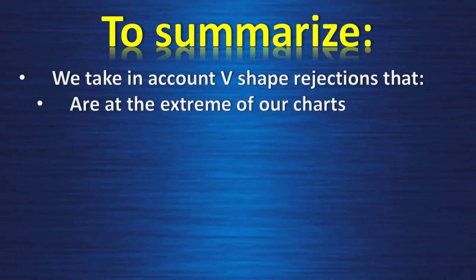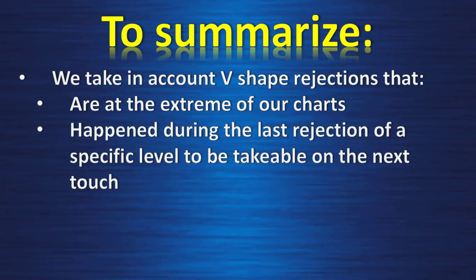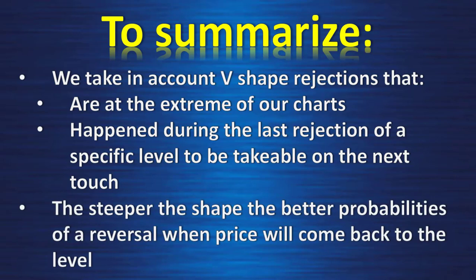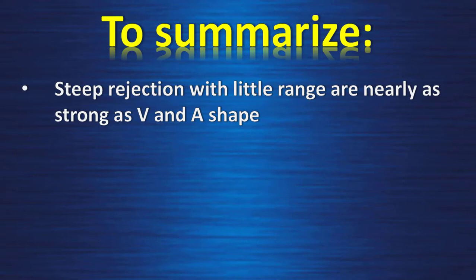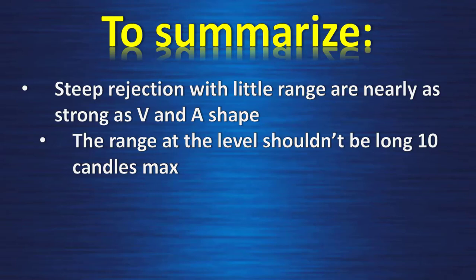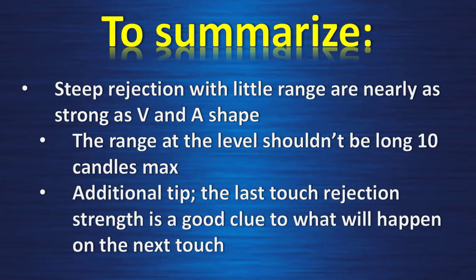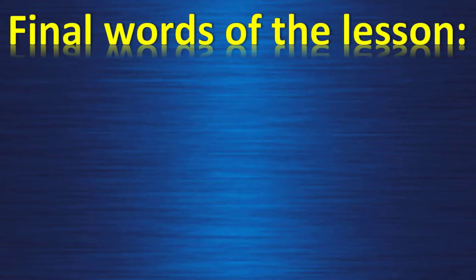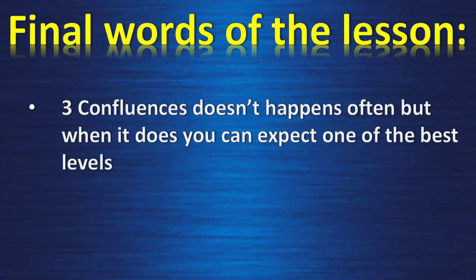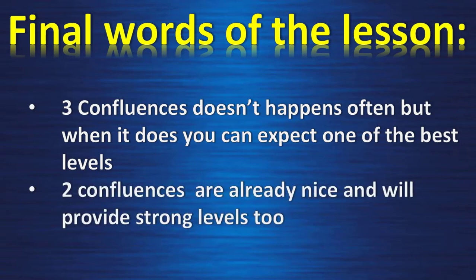To summarize: we take into account V shape rejections at the extreme of our chart that happen during the last rejection of a specific level to be tradeable on the next touch. The steeper the shape, the better the probability of a reversal when price returns to the level. Steep rejection with little range is nearly as strong as V and A shapes — the range at the level should not be longer than 10 candles. The last touch rejection strength is a good clue to what will happen next: the stronger the last rejection, the higher the probability of success on the retouch. Three confluences don't happen often, but when they do you can expect one of the best levels. Two confluences are already nice and will provide strong levels too.